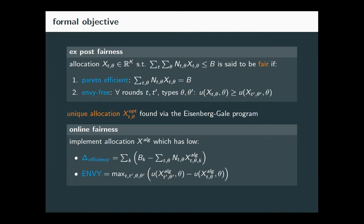If I had a solution that was Pareto efficient and envy-free, both metrics would be zero. But in the online stochastic model we must allow for some nonzero envy or waste. We want to understand how these metrics trade off and what's the optimal guarantee achievable given this uncertainty.